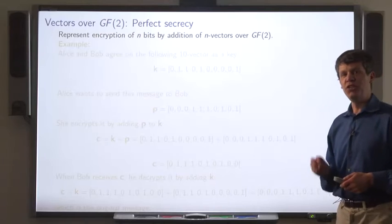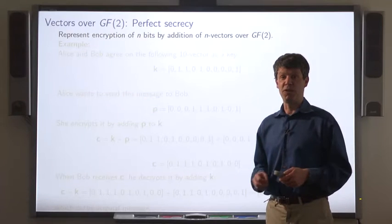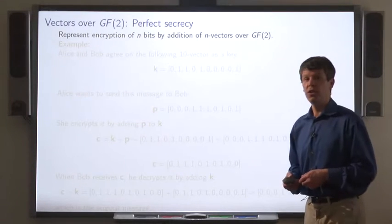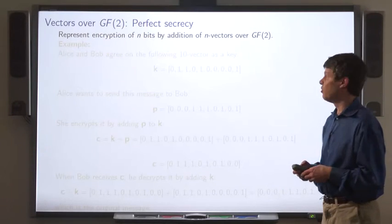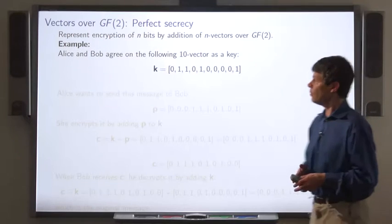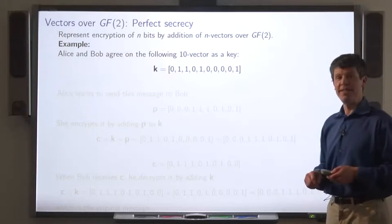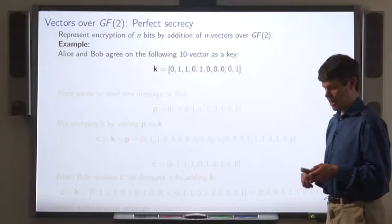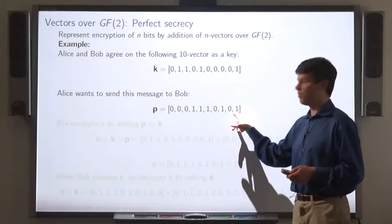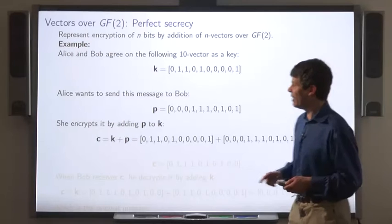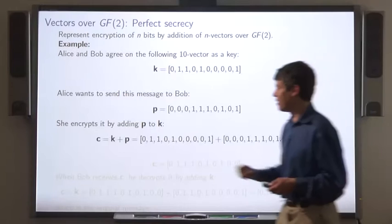Let's see how we can use GF2 addition to achieve perfect secrecy in a cryptographic sense. We're going to represent encryption by n-vector addition over GF2. So let's imagine that Alice and Bob agree on a key — it's a 10-vector over GF2. Later, Alice wants to send a message to Bob. She encrypts it by adding the plaintext P and the key K to get the ciphertext.